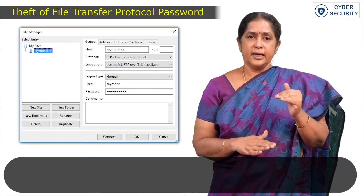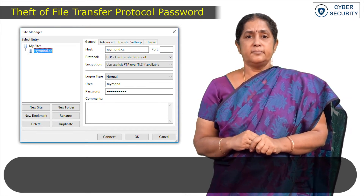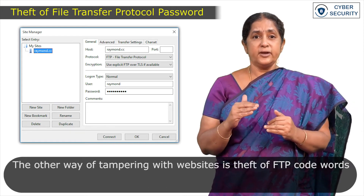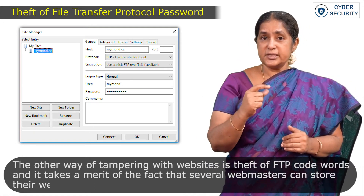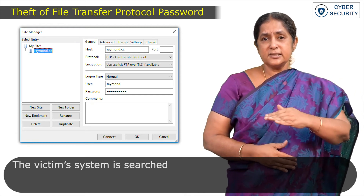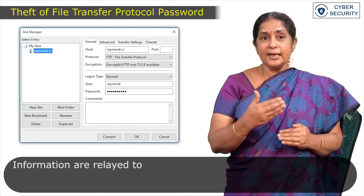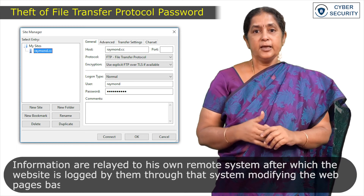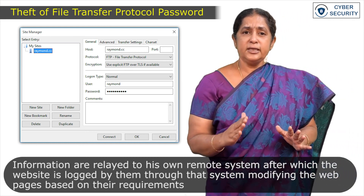Finally, the last type of attack on assets is the theft of file transfer protocol passwords. The other way of tampering with websites is the theft of FTP credentials. It takes advantage of the fact that several webmasters store their website login information on poorly protected systems. The victim's system is searched to identify FTP login information, which is then relayed to a remote system, after which the attacker logs into the website and modifies the webpages based on their requirements. These are some of the common attacks on assets.